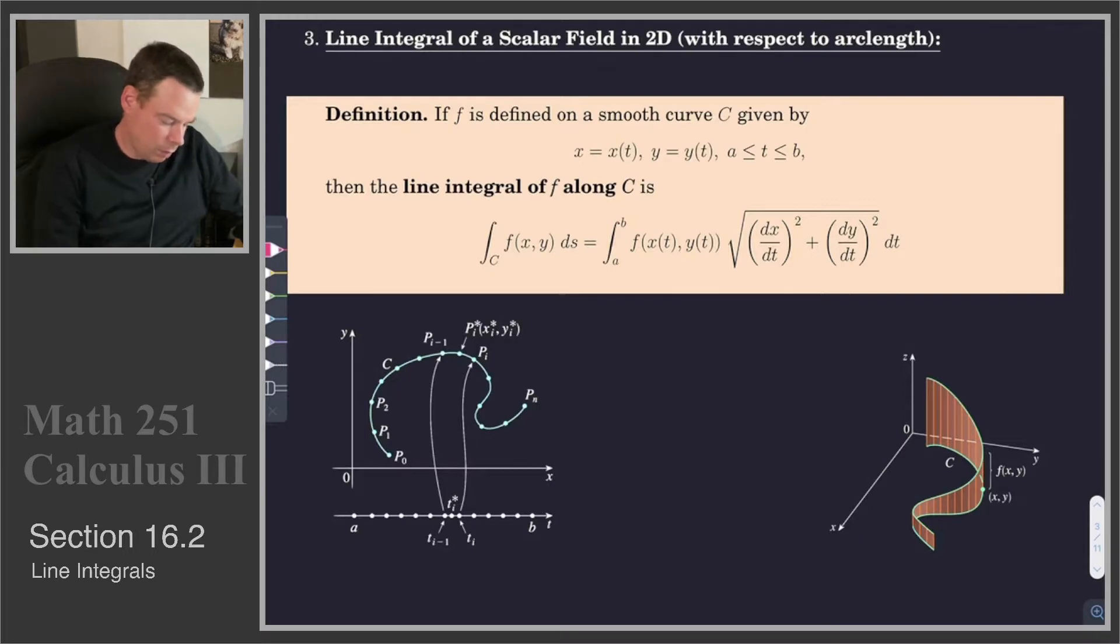Now, if you recall, ds is equal to the magnitude of r'(t) dt. And so there's the magnitude of r'(t) written out in full. It's dx/dt squared plus dy/dt squared all square rooted. So that left-hand side of the integral is a shorthand for what we would have to unpack if we wanted to actually evaluate it.